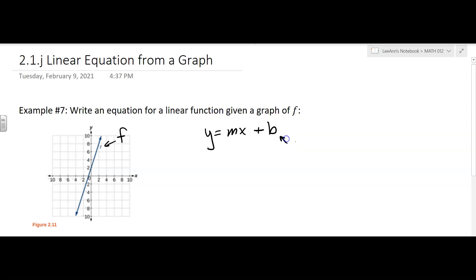So b represents the y-intercept. I'm going to see if I can see what the y-intercept is. It looks like the y-intercept is right there. Okay, so at 0, 2, which means b is 2.